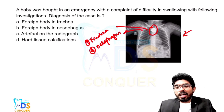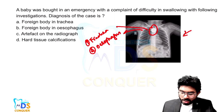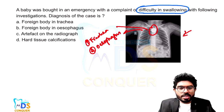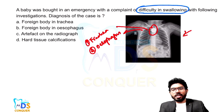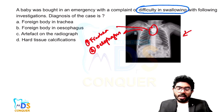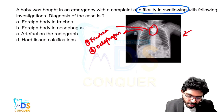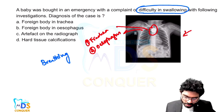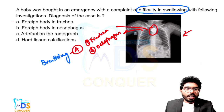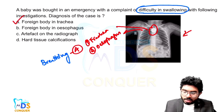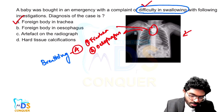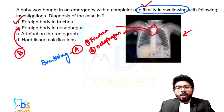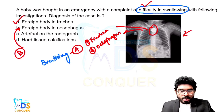Now, if you observe the complaint given by the mother in the emergency ward, they are clearly mentioning that the baby is feeling difficulty in swallowing. Swallowing is most often related to the GI tract. So the answer here is the esophagus. For example, if the question mentions difficulty in breathing with the same X-ray, then your answer would be option A, that is trachea. But since this question states difficulty in swallowing, the answer is option B — an object in the esophagus.